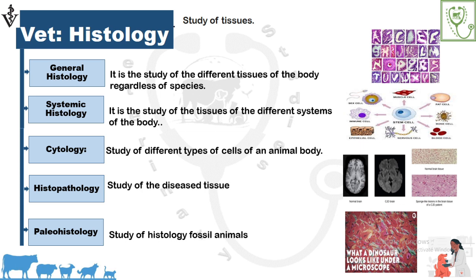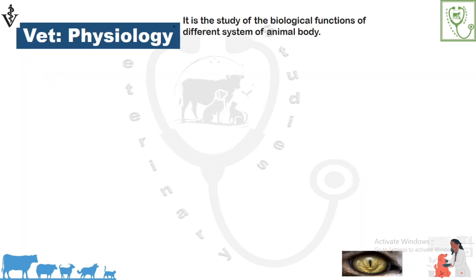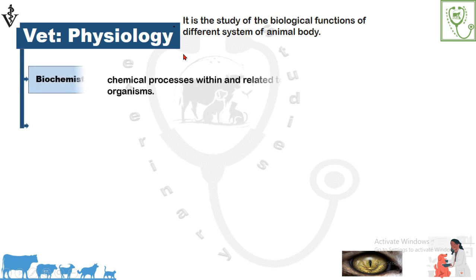Veterinary physiology is the scientific study of the biological functions of different systems of the animal body. Veterinary physiology includes biochemistry, in which we study about the different biochemical processes that take place in a living organism. This includes enzymes, hormones, metabolism of the animal body, and the biochemical processes which take place in the animal body.